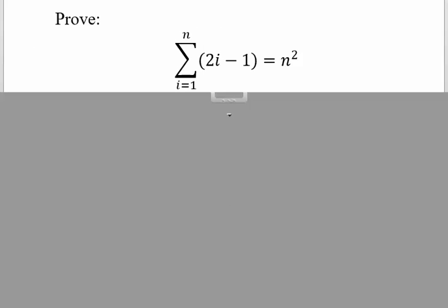Here's the statement we're trying to prove. The summation as i goes from 1 to n of 2i minus 1 is equal to n squared.